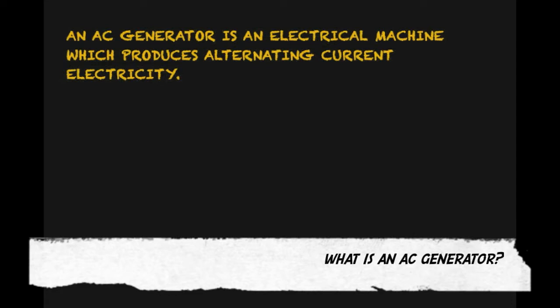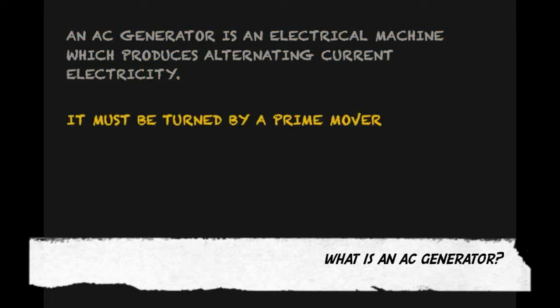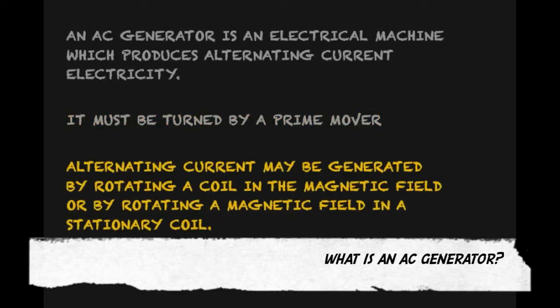An AC generator is an electrical machine which produces alternating current electricity. It must be turned by a prime mover. Alternating current may be generated by rotating a coil in the magnetic field, or by rotating a magnetic field in a stationary coil.